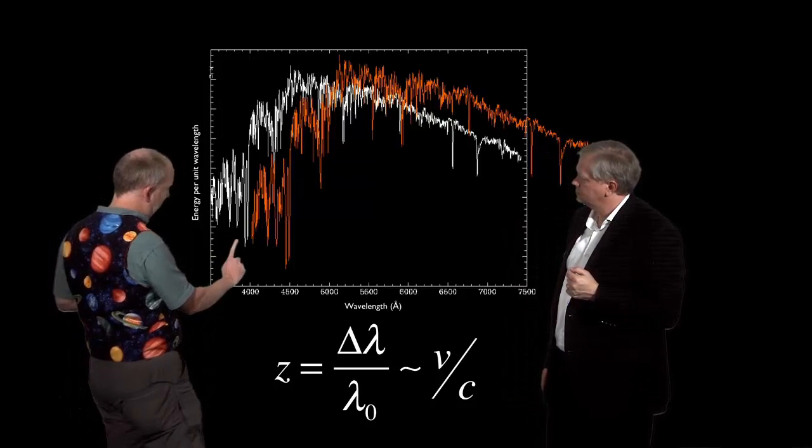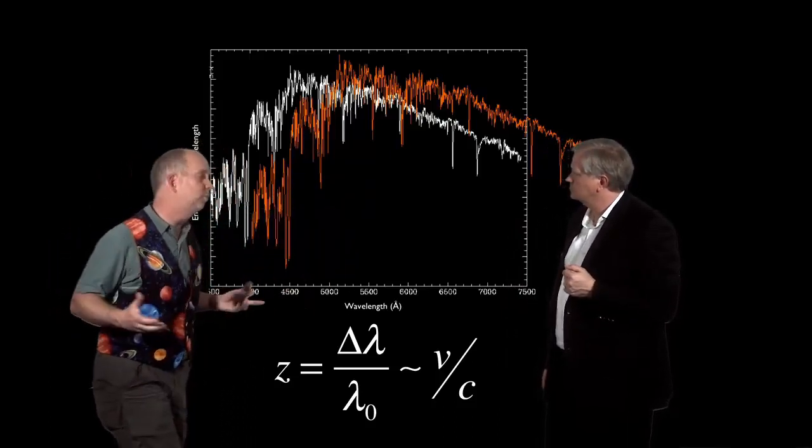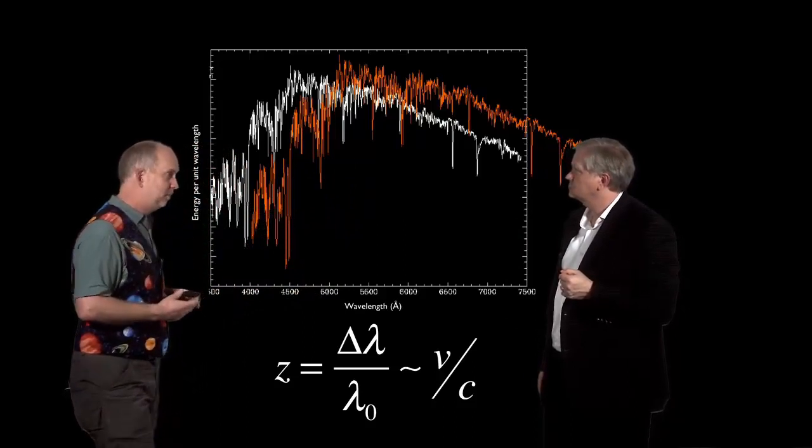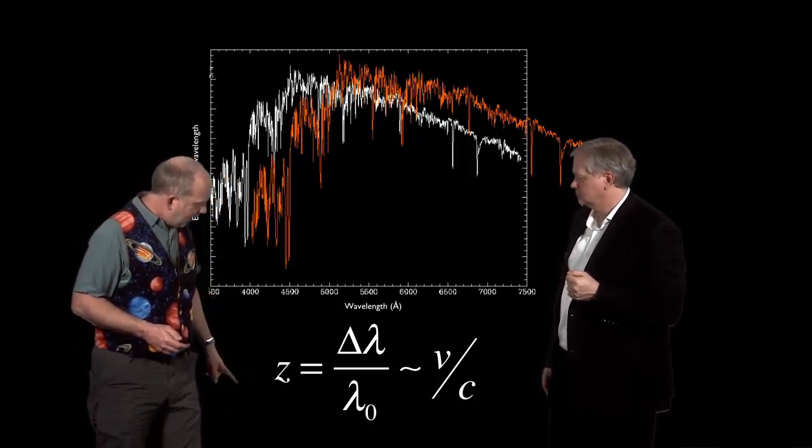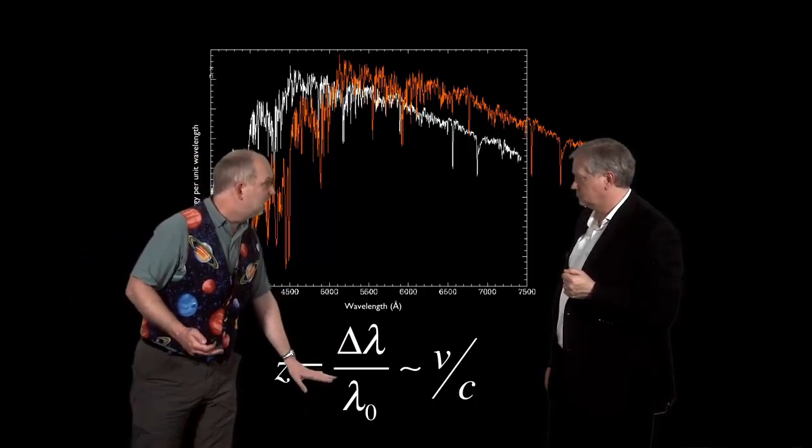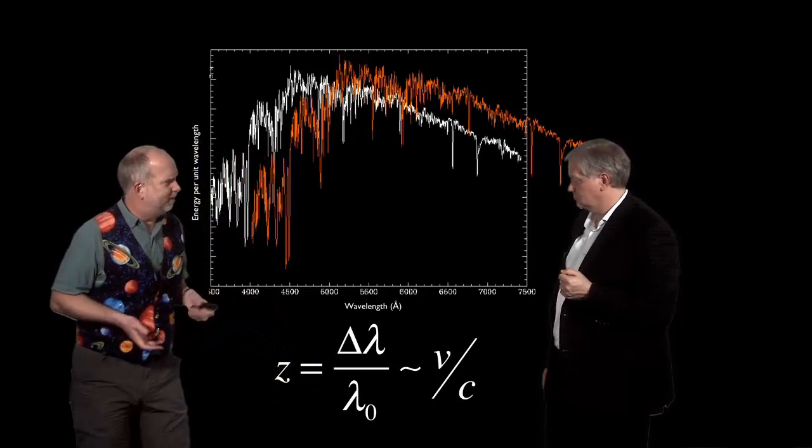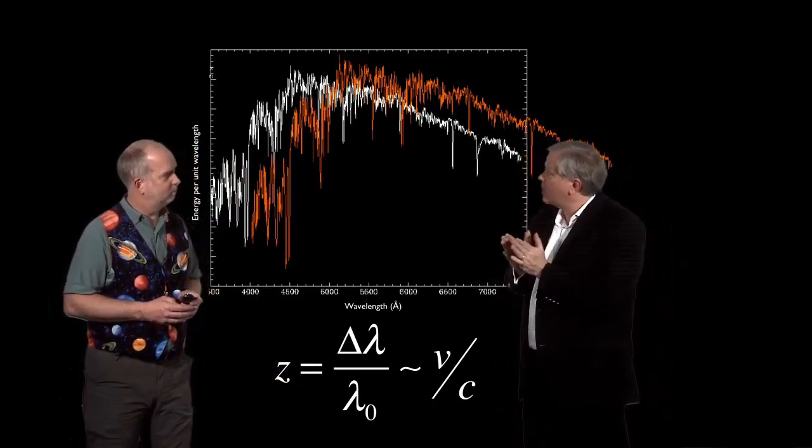What you find is that every dip or peak or bump in the spectrum, every emission or absorption line has had its wavelength increased by a constant ratio, and that ratio is called the redshift and written for some unknown reason as Z rather than R, and it's given by the shift in wavelength divided by the wavelength you'd expect in a nearby galaxy or in your laboratory. So what's going on here?